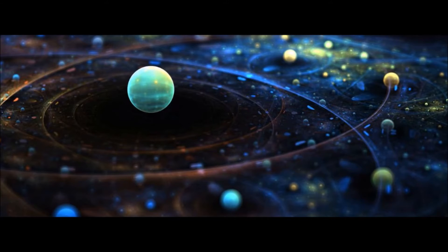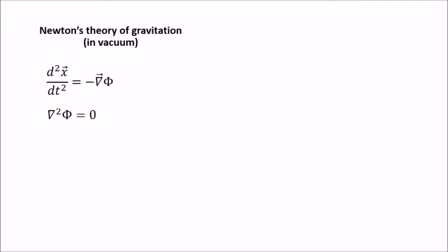Let's begin by writing down Newton's theory of gravitation. X here is the position of a particle whose motion is influenced by the gravitational potential phi. The solution to these equations will depend on the mass and shape of the object that generates the gravitational potential.